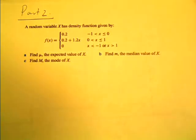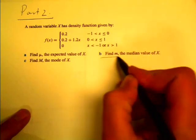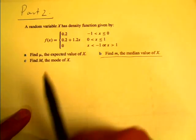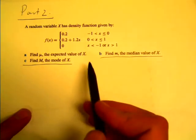Okay, in this clip we're going to look at part two of the clips on continuous random variables and we're going to look at finding the median value of x given that density function and finding the mode. We'll look at the expected value in another clip.